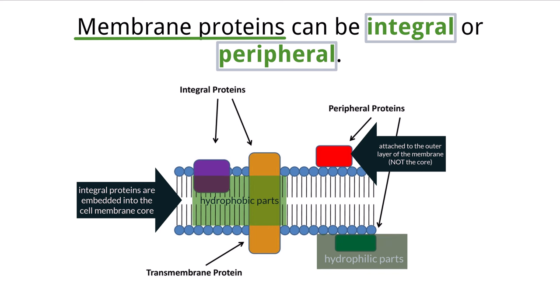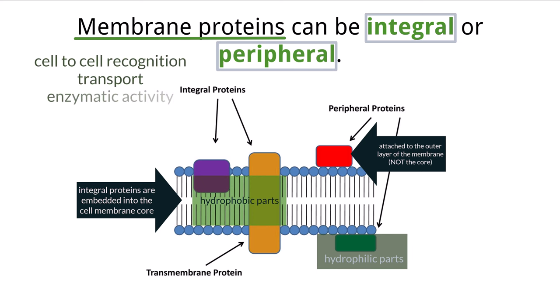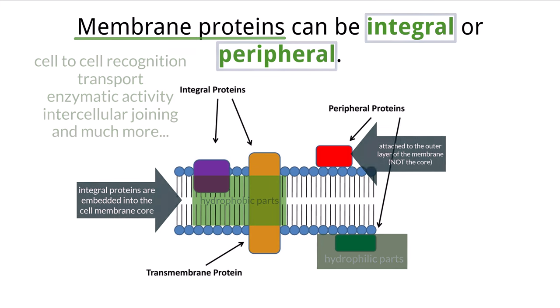Peripheral proteins are attracted to the hydrophilic heads of the phospholipids on the exterior part of the membrane and can be anchored to the membrane by binding with a separate integral protein. The functions of membrane proteins include cell-to-cell recognition, substance transport, enzymatic activity, intercellular joinings, and much more.